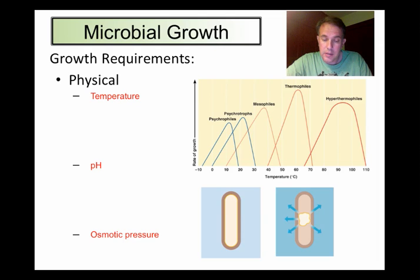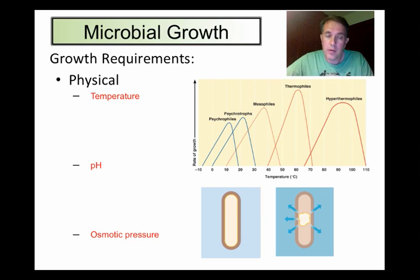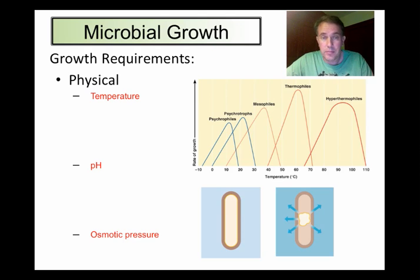Most bacteria can only grow and survive within a very narrow pH range as well, usually around neutral, about 6.5 to 7.5 pH. This is why foods that are highly acidic, like pickles or sauerkraut, are very resistant to spoilage. When bacteria are grown in the lab, they often produce acidic waste products that eventually interfere with their own growth. For this reason, the media will frequently include buffers, which will prevent the pH from changing too dramatically and ultimately killing the bugs.